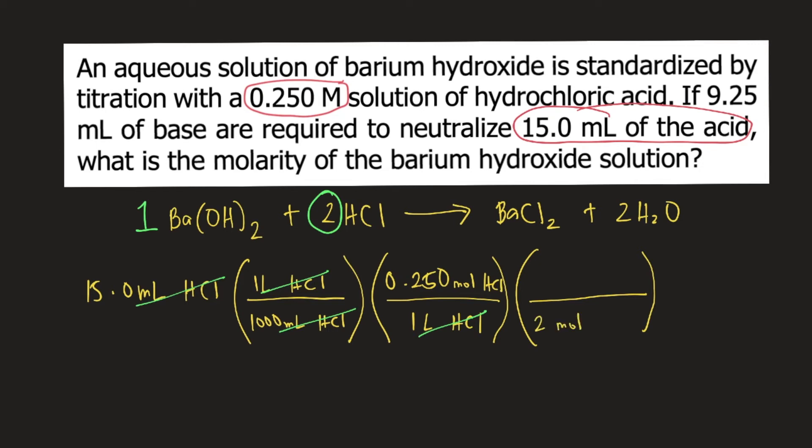2 moles of HCl to 1 mole of barium hydroxide. The moles of HCl will cancel and our unit would be moles of barium hydroxide. If you compute this entire equation, this is equal to 0.001875 moles of barium hydroxide.